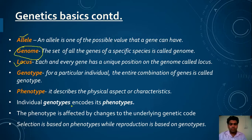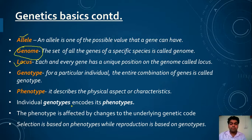Individual genotypes encode phenotypes — phenotype refers to the physical aspects or characteristics of an individual. The phenotype is affected by changes to the underlying genetic code. The most important thing in natural evolution is that selection is based on phenotypic characteristics. We decide which individuals to select based on phenotype, but reproduction is based on genotypes — we do selection on a phenotype basis and reproduction on a genotype basis.